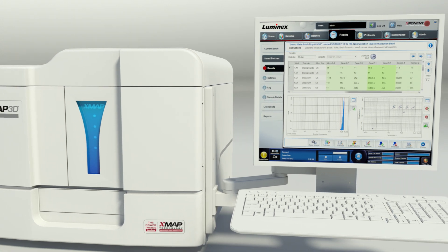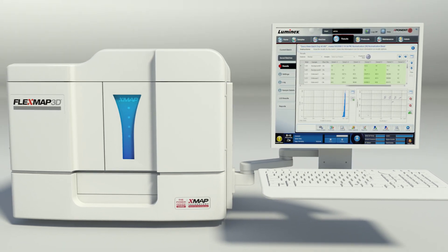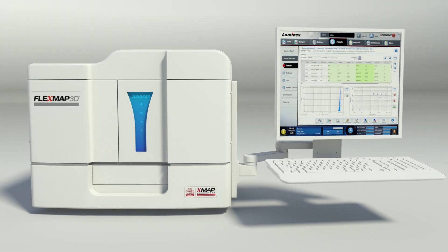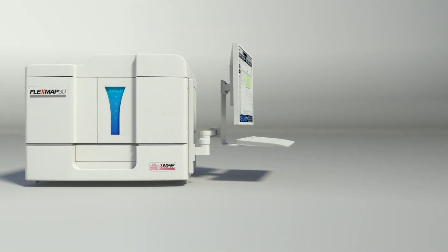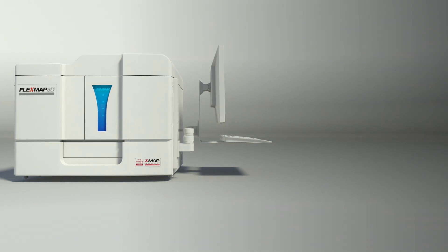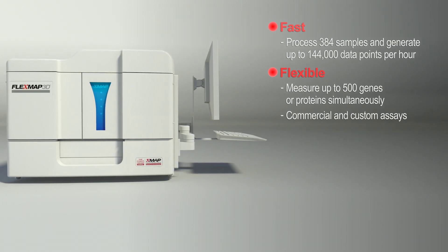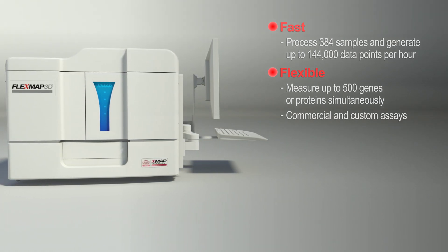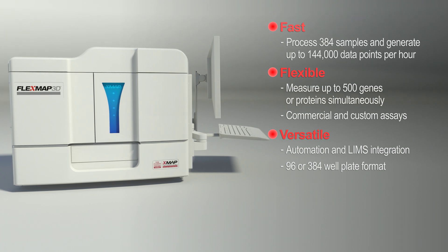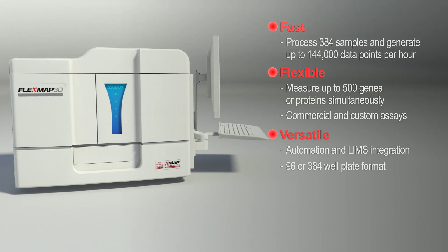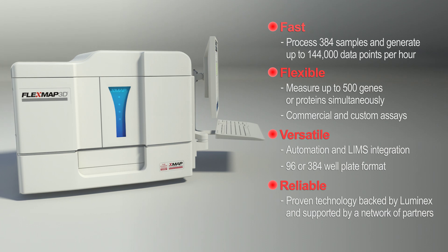The FlexMap 3D system assures high throughput without compromising flexibility or performance. Optimize your workflow with automated routine tasks, integrated front-end sample preparation, and acquire more answers per test than ever before. FlexMap 3D helps you meet the constant demands for high-quality data with features like fast read times, the ability to simultaneously measure up to 500 genes or proteins, a large menu of commercial kits and reagents to develop custom assays, front-end automation and laboratory information systems integration, compatibility with both 96 and 384 well plate formats, automated startup and shutdown routines, and it's easy to use.